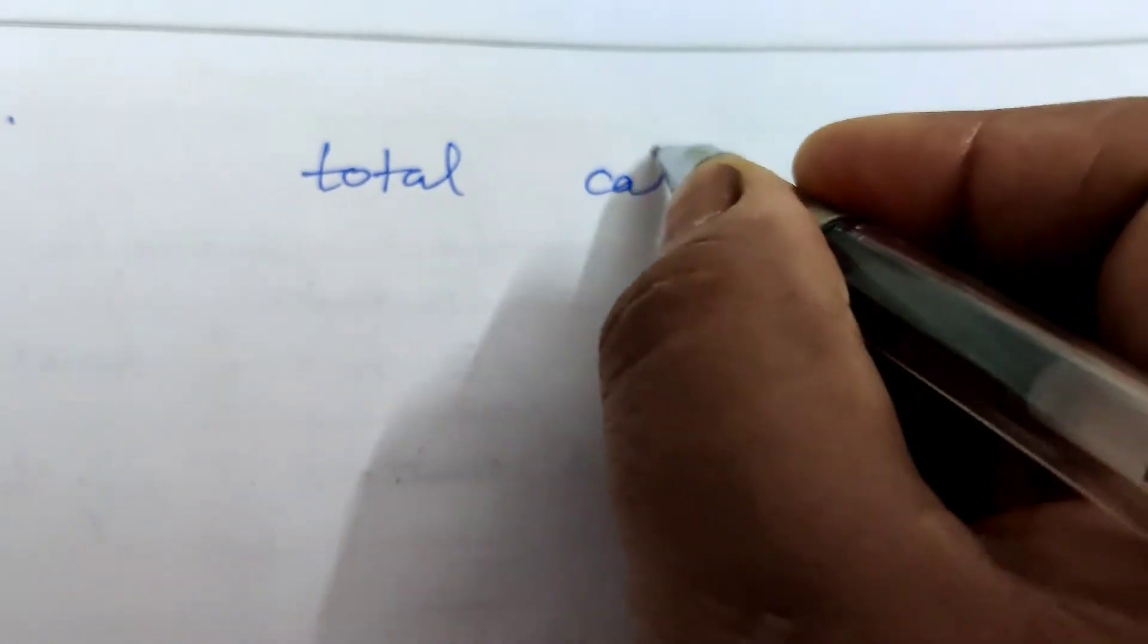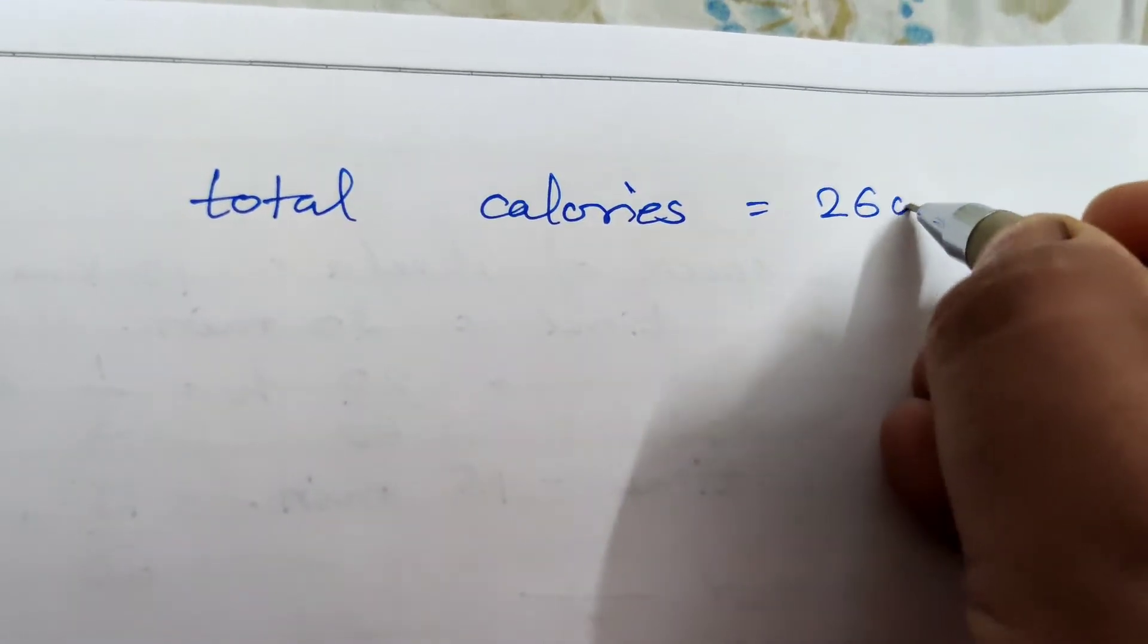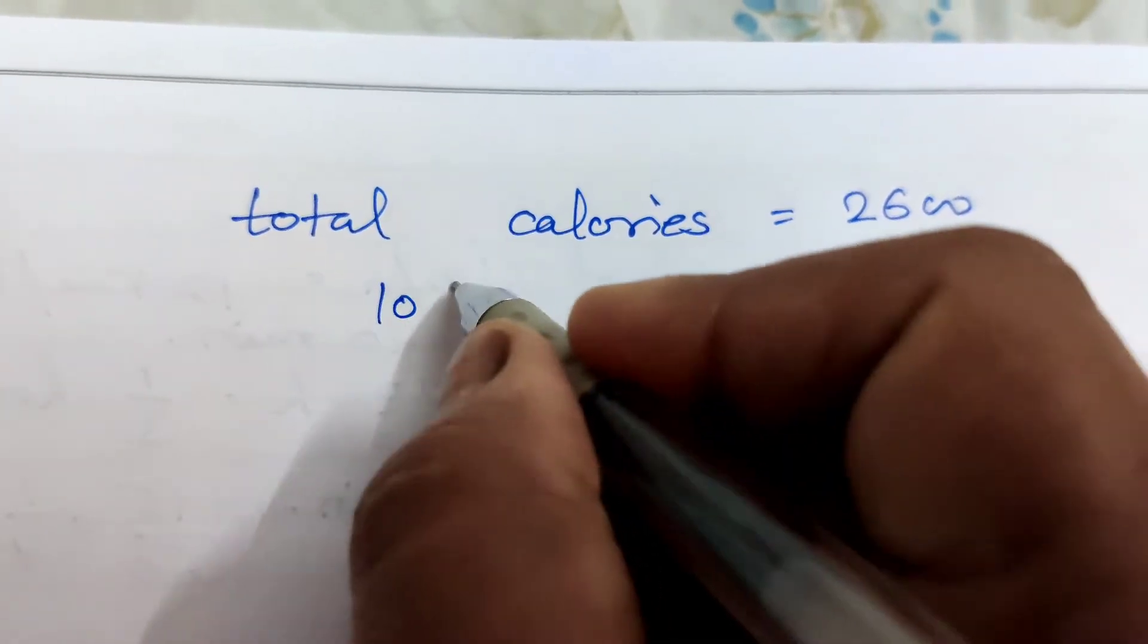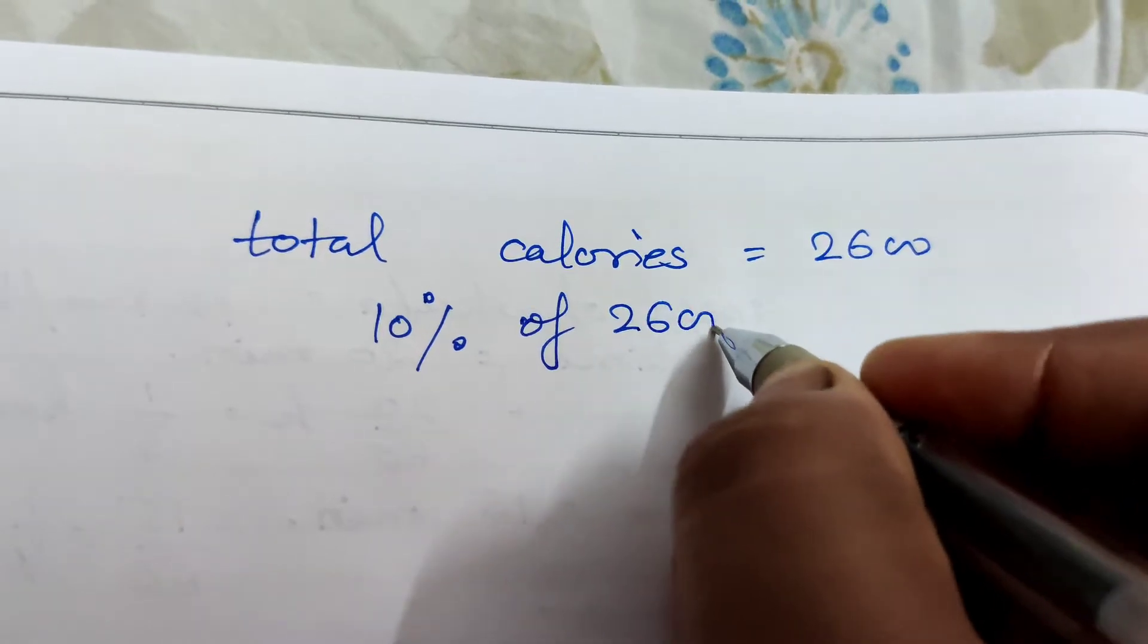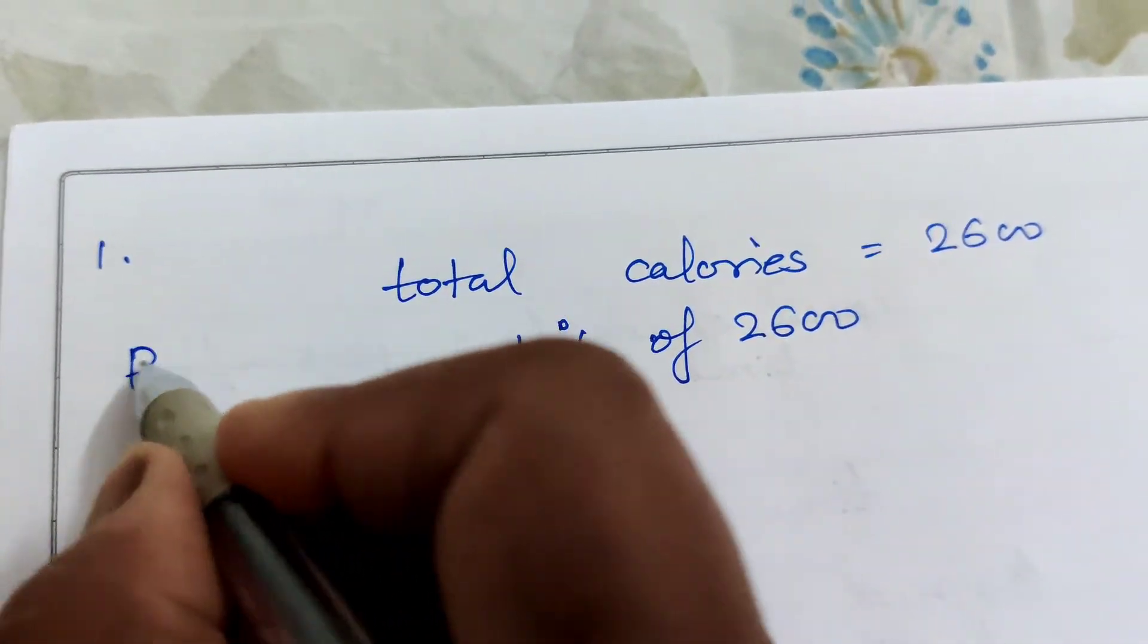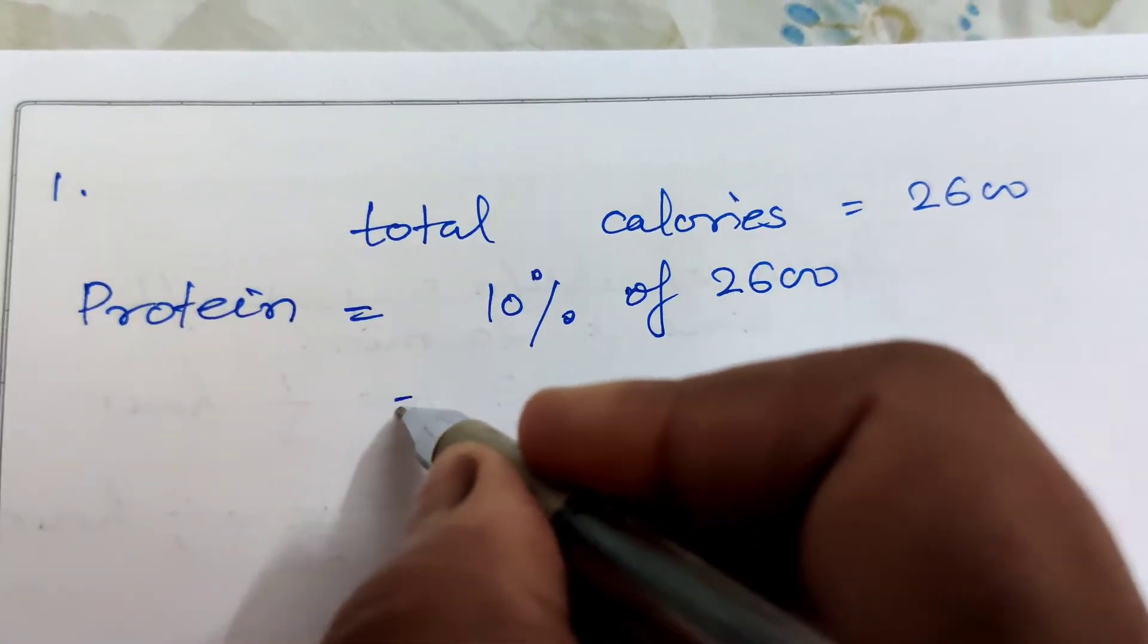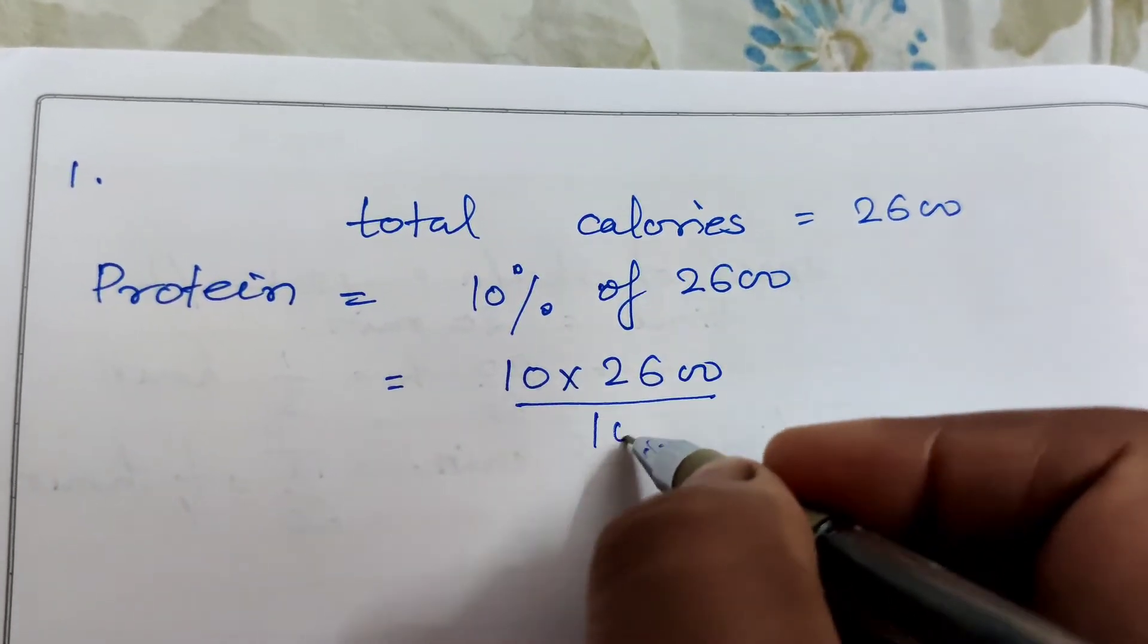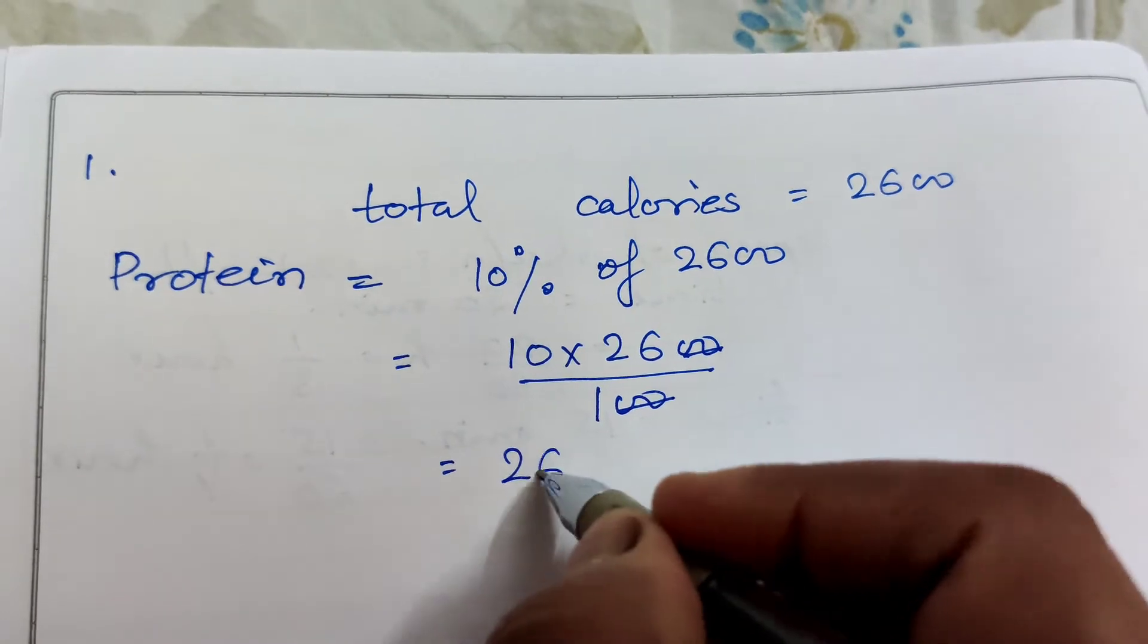Total calories required: 2600. Okay, the protein. Protein equals 10% of 2600. That's 10 into 2600 by 100. We get 260 calories for protein.